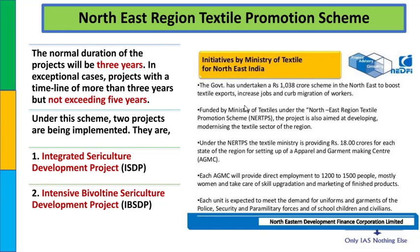NERTPS के अंदर Ministry of Textile द्वारा ₹18 करोड़ दिए जा रहे हैं, जिसके basis पर apparel और garment making centers खोले जा रहे हैं. यह ensure किया जा रहा है कि most women इसमें employment पाएं. प्रत्येक apparel और garment making center में कम से कम 1200 से 1500 लोग employment पा सकते हैं. इनका काम कभी खत्म नहीं होगा - police, security, paramilitary forces, civilians और school children के uniforms और garments बनाने का काम इनका है.